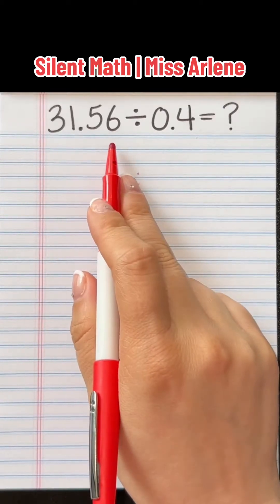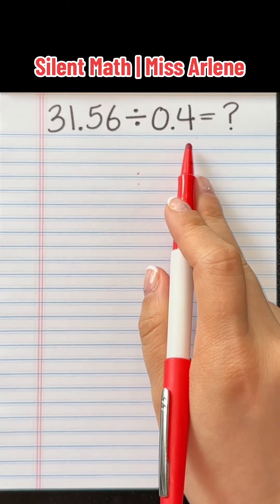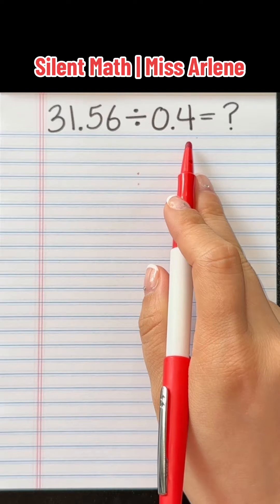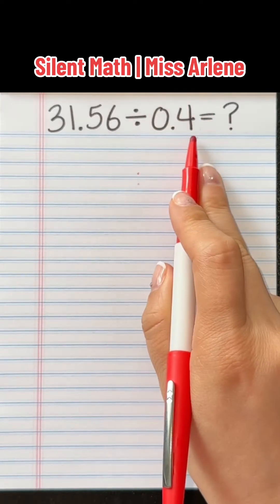How would you solve 31.56 divided by 0.4? A lot of people get confused when dividing with decimals. The biggest thing is you want to make sure your second value is a whole number.